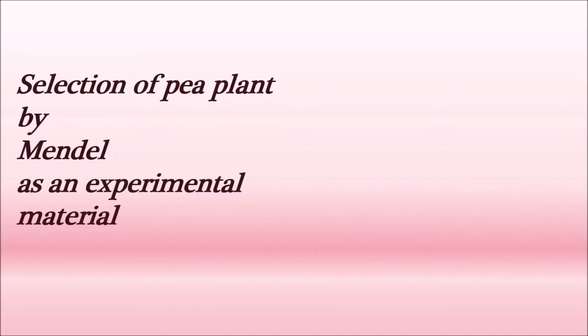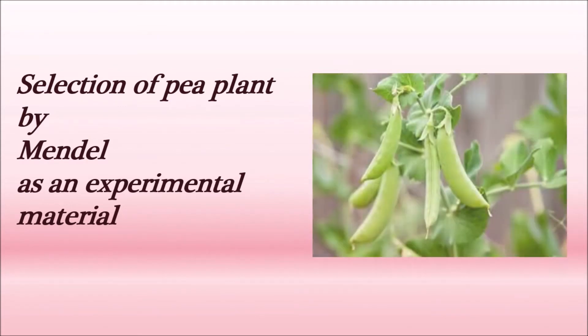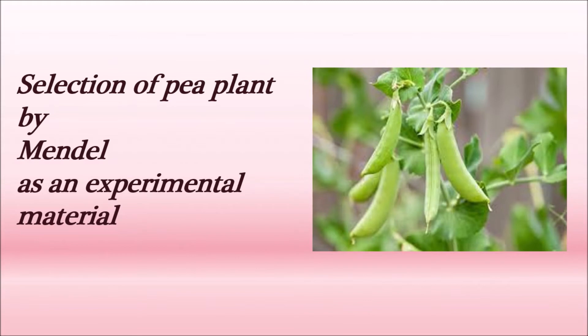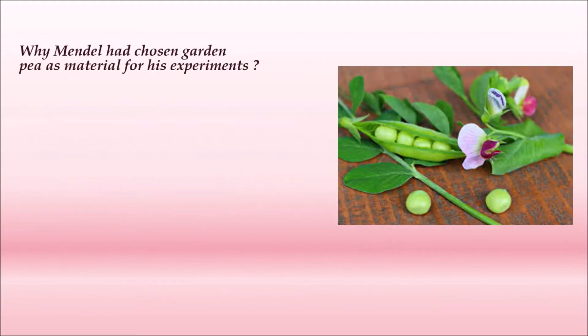Hi all, a very good morning. This is VC from VC's Academy. In this class we will discuss the selection of pea plant by Mendel as an experimental material — why Mendel selected the pea plant as an experimental material and what made him choose it.